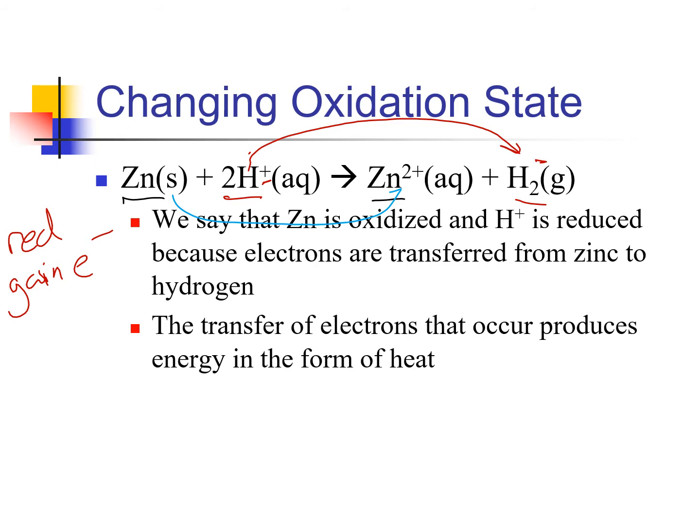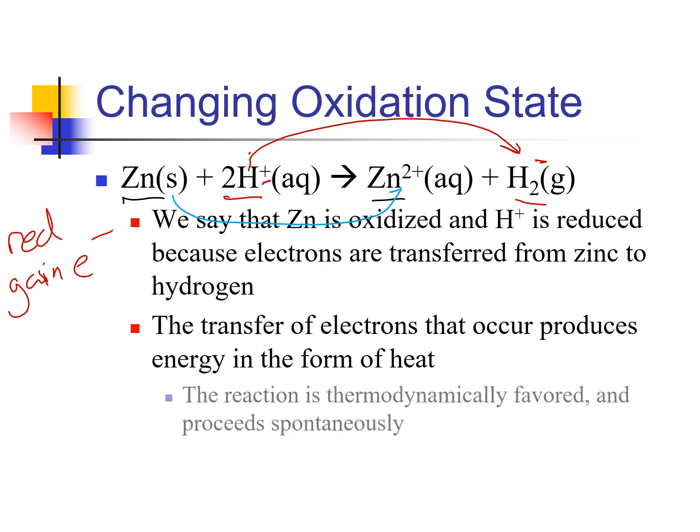Redox reactions tend to be very spectacularly energetic because this transfer of electrons produces heat and can produce light. This is actually where electricity comes from — this electrical energy is from the movement of electrons. This reaction would be thermodynamically favored and proceed spontaneously.